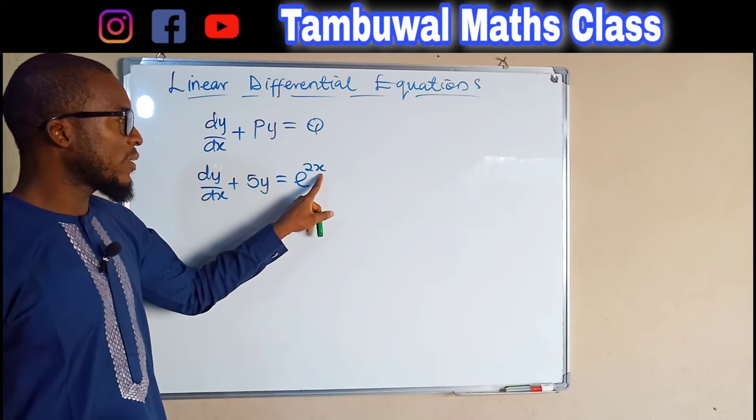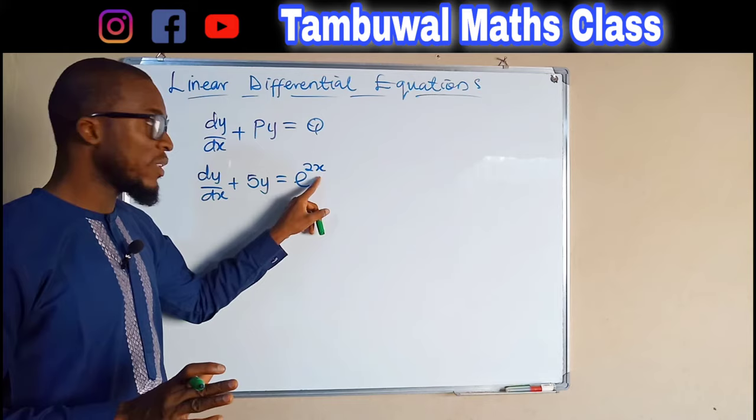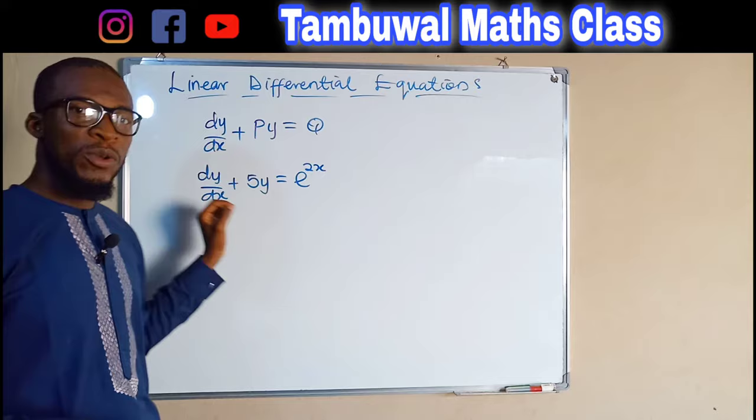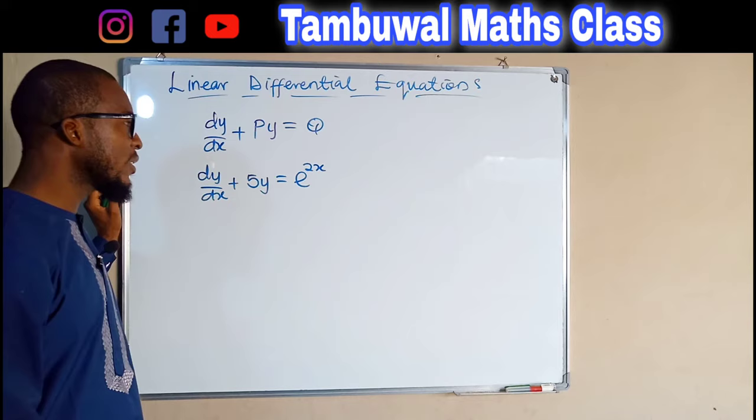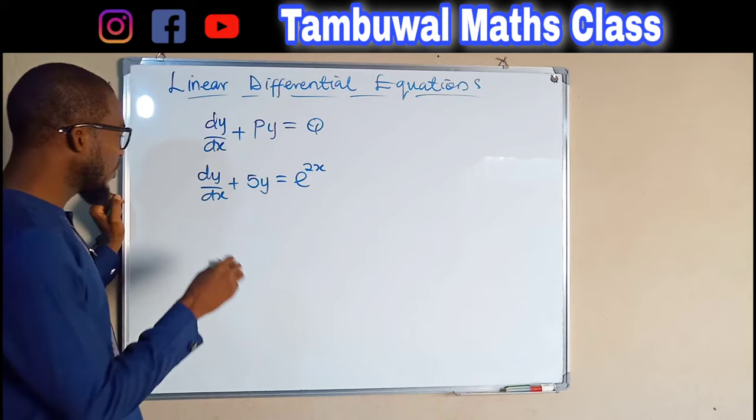A linear differential equation requires that y never takes any power apart from 1. We have e^(2x) where 2x is a function of x. If it were a function of y, we would say it is a non-linear differential equation. None of the methods we applied initially can be used to find the solution for this form, hence we are going to obtain a particular factor which we call the integrating factor.